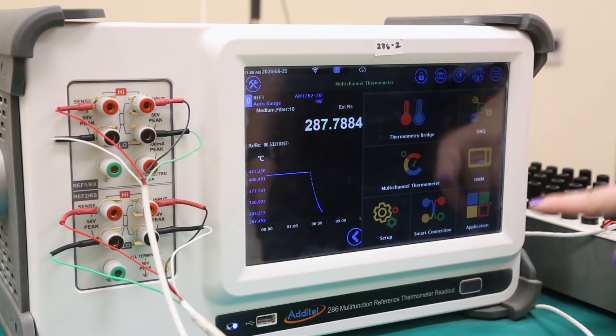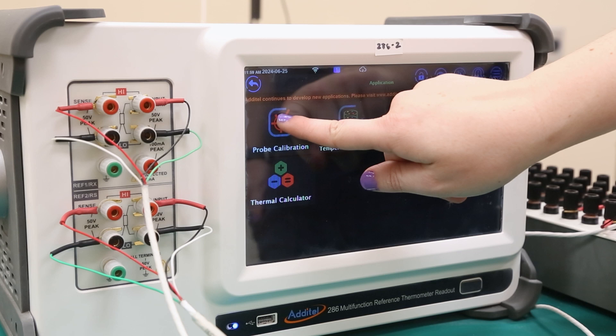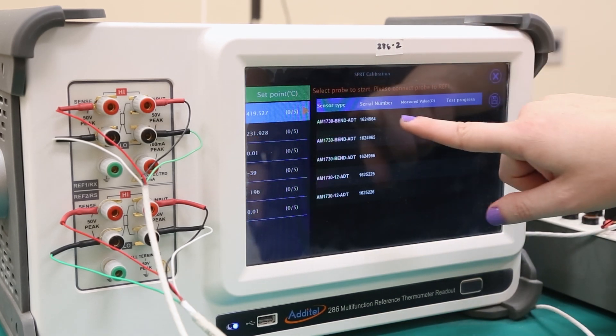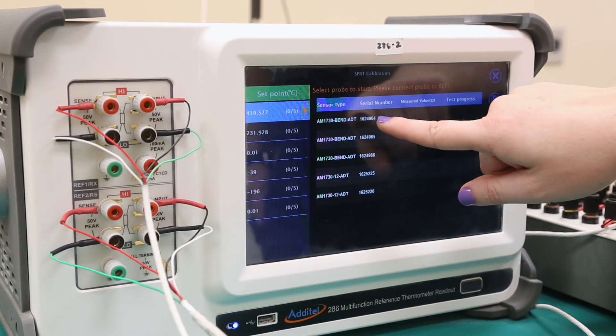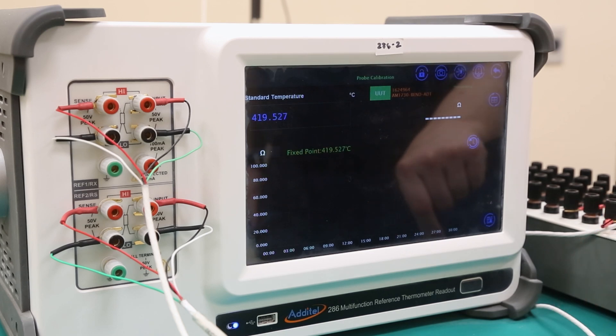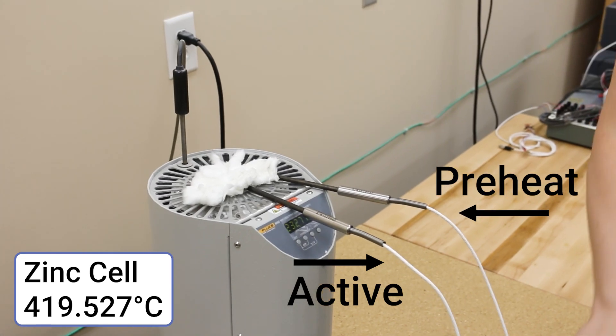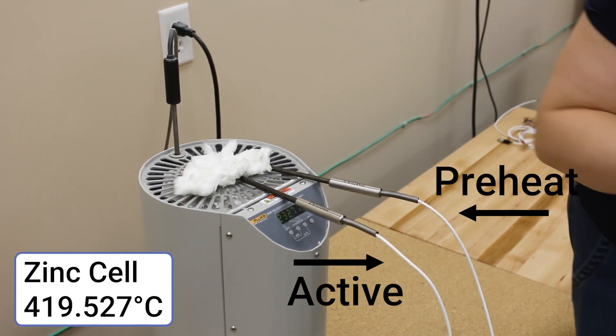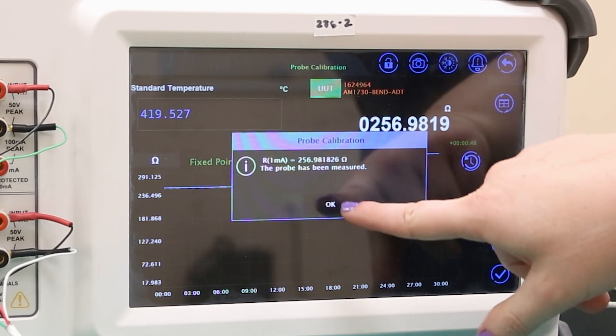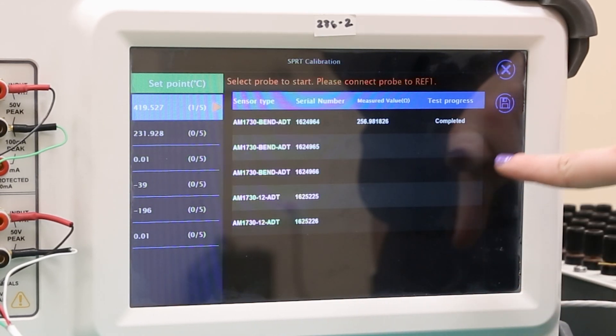On the 286, we will go back to the probe calibration application, select our test, and select the first calibration point and probe that we are measuring. After the probe measurements begin, we can set up the next probe by adding it to the preheat well of the zinc cell furnace. Once the 286 has finished measuring the first probe, press the check mark button to continue.